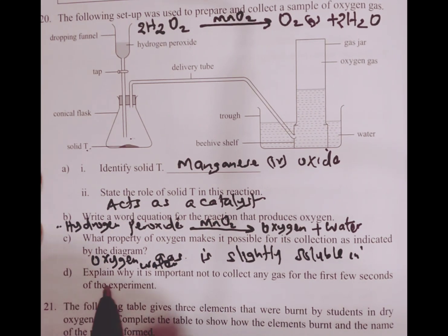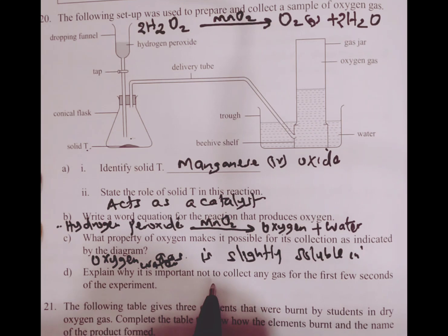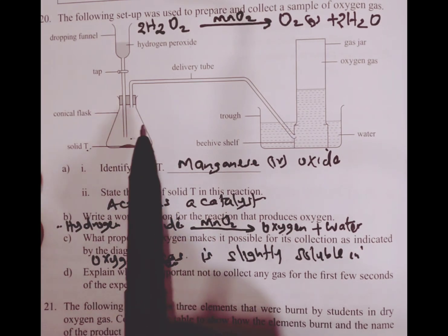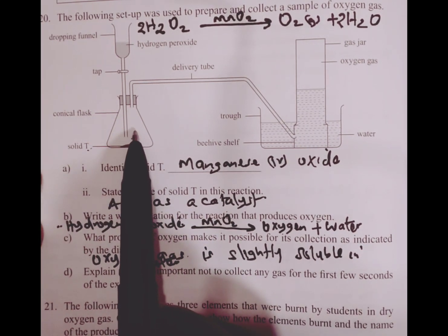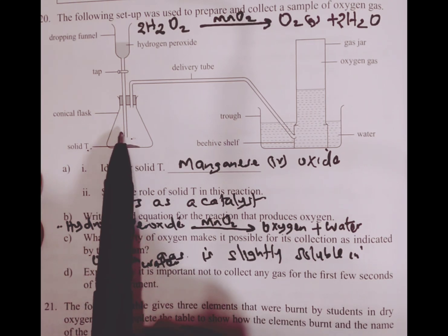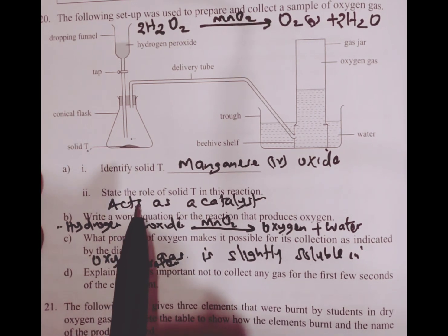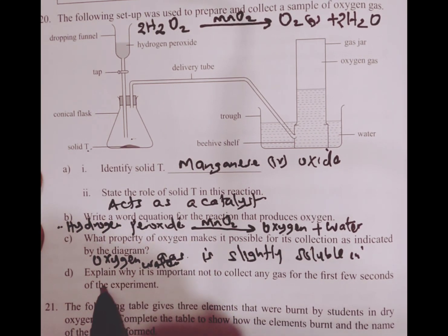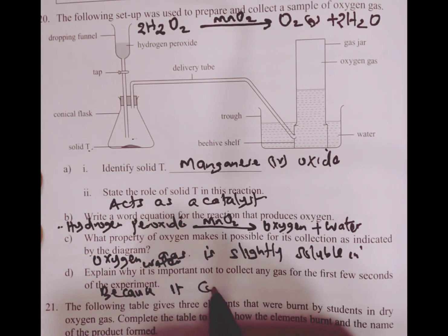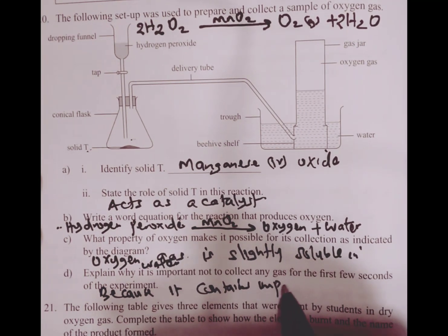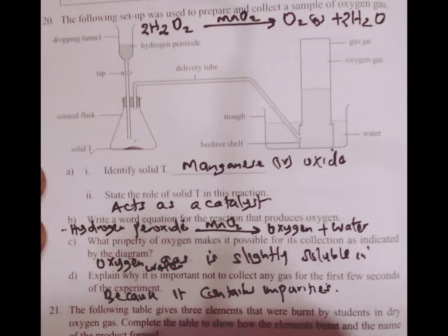Part D, explain why it is important not to collect any gas for the first few seconds of the experiment. This is because initially there is some air in this conical flask and therefore the first few volumes of oxygen gas should not be collected because it is impure. So in this case we can say it contains impurities.